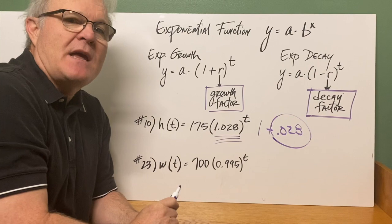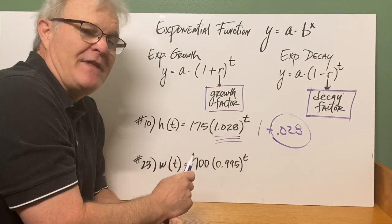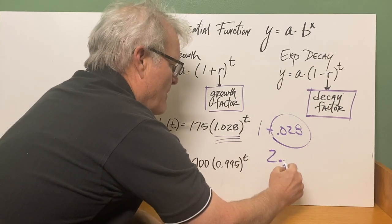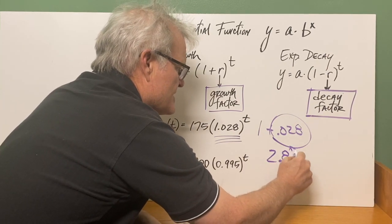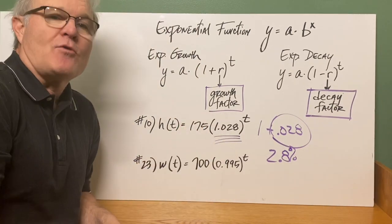You would want to write that as a percentage. Remember to change a decimal to a percent, you're going to move that two to the right. So this would be a 2.8 percent growth factor.